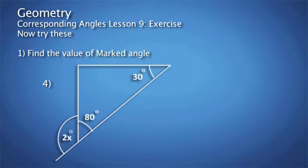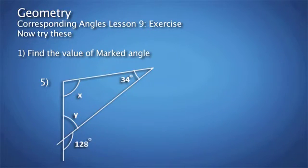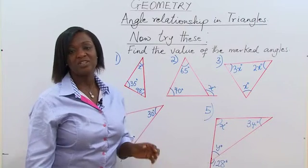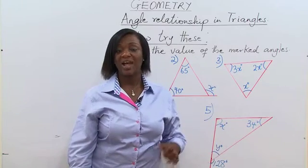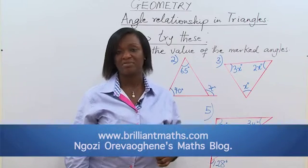Question four, we also have an exterior angle — find the value of X. Finally, question five, find the value of X and Y. These are very easy. Just take your time, draw them out and solve them. Keep watching this channel, subscribe and don't forget to give us a thumbs up.